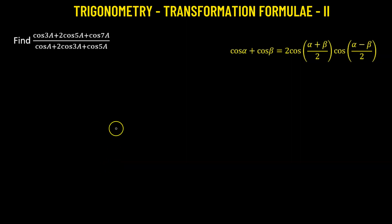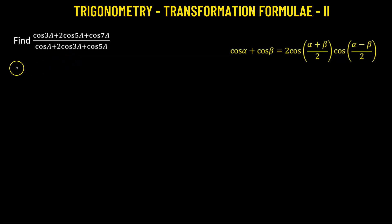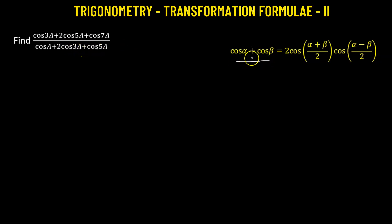In this problem, we need to determine the value of the given trigonometric expression. Clearly, we see that in the numerator we have a sum of cosine functions, and in the denominator as well. So here we can apply the transformation formula.